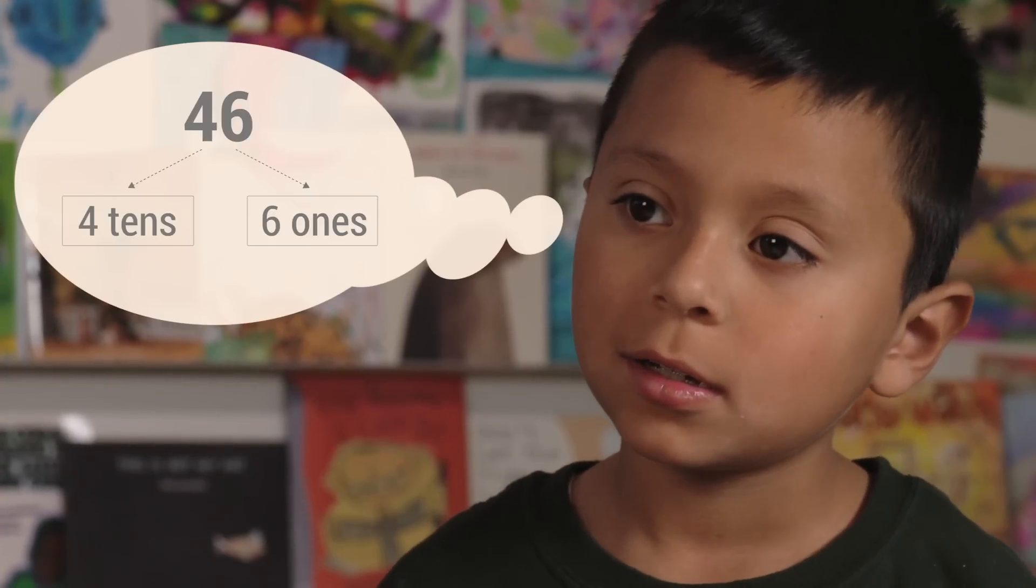They might be small, but first graders can get some big concepts. Throughout first grade, they will come to understand that two-digit numbers represent amounts of tens and ones. They might start the year asking questions like, 'What's a digit?'